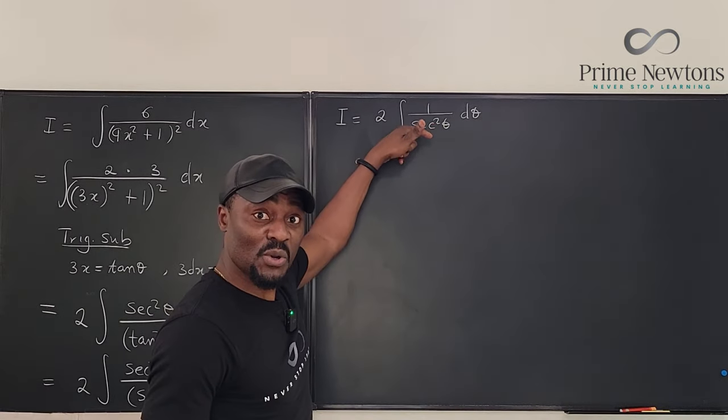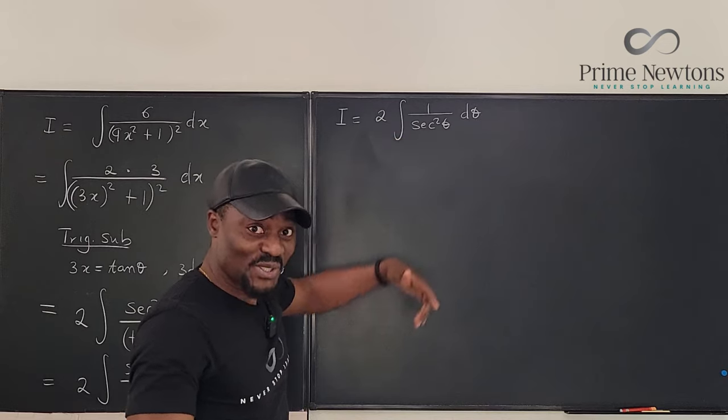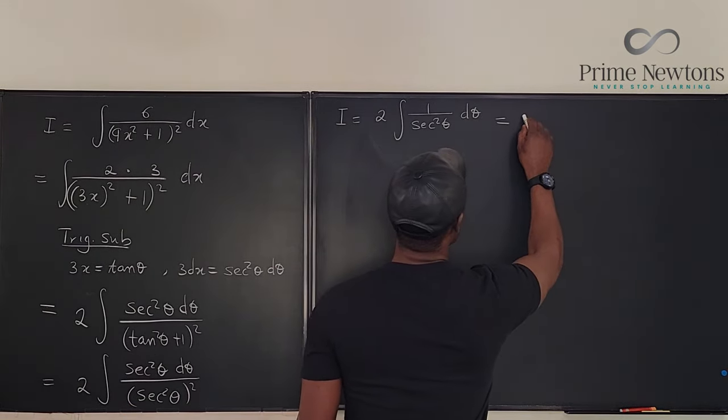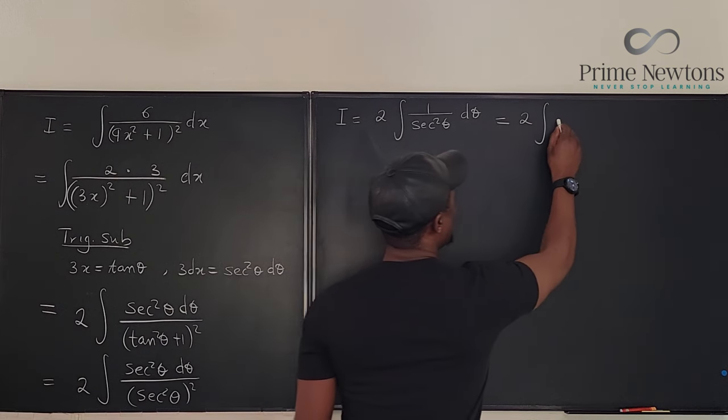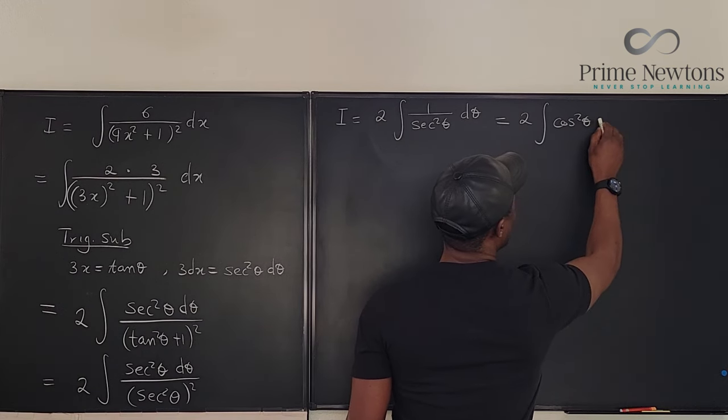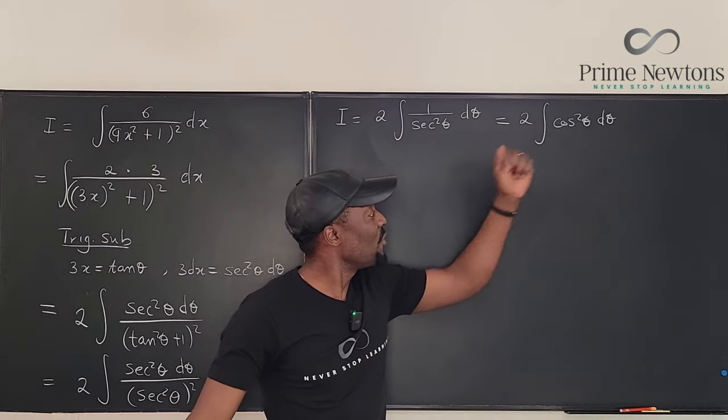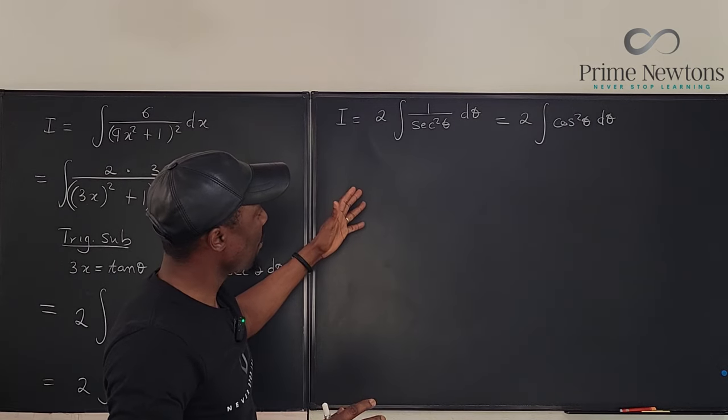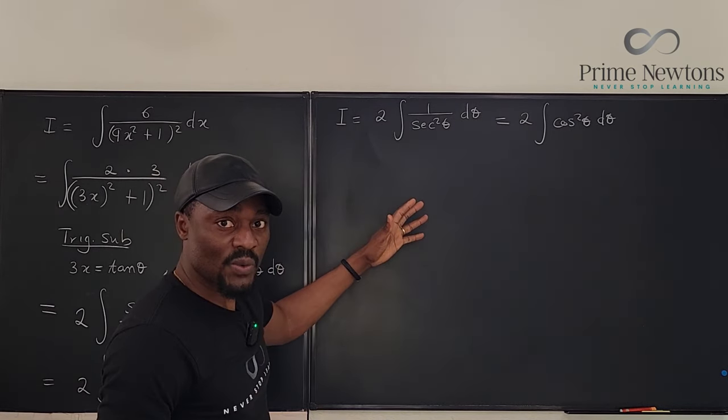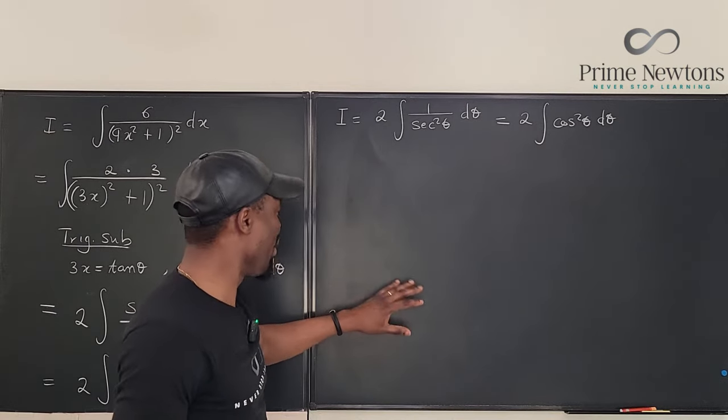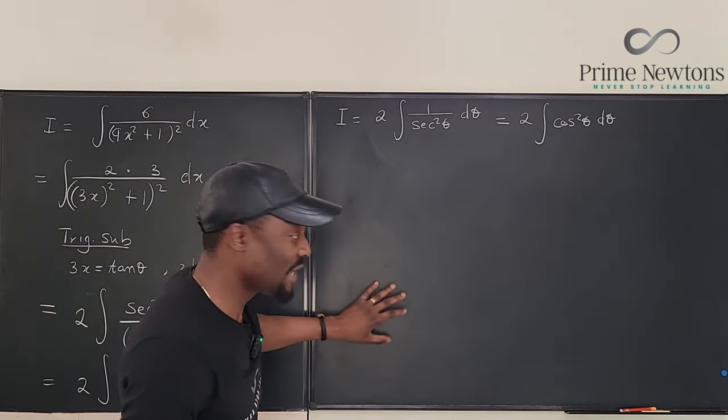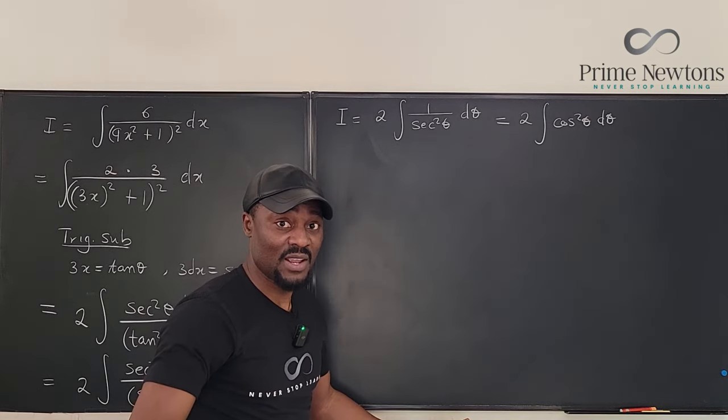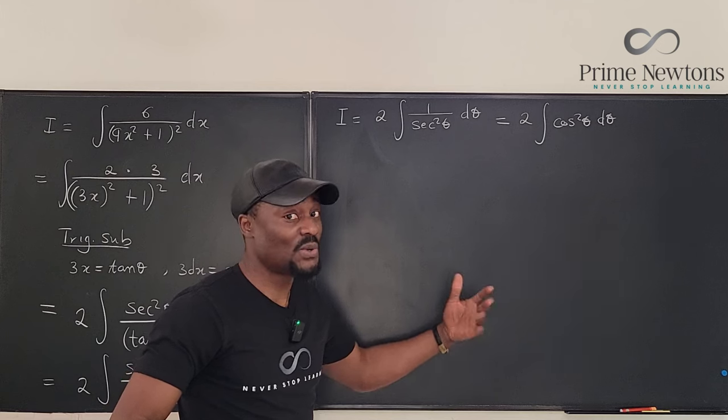But what is the reciprocal of secant squared? It's cosine squared. So our answer here is equal to 2 times the integral of cosine squared theta d theta. How do we integrate this? The double angle formula has to come into the picture. You see every time you have this you cannot integrate cosine squared. You have to make it not raised to the second or third power.